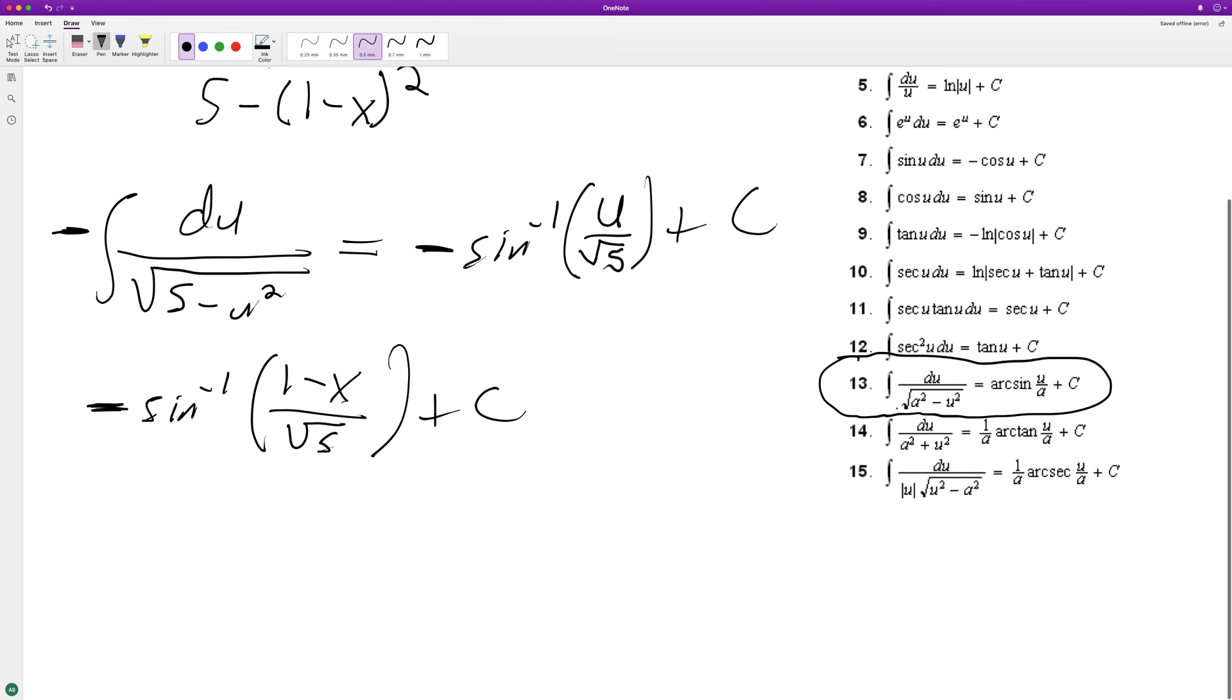And if you want to go extra further, sine is an odd function, so we can put this back in here. And we end up with arc sine of x minus one over the square root of five plus c.